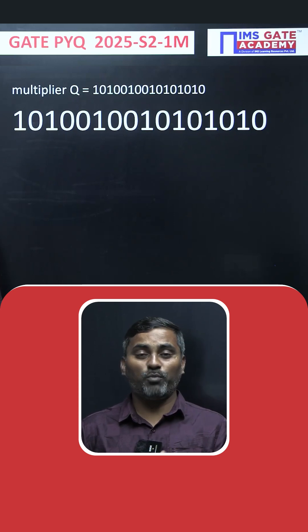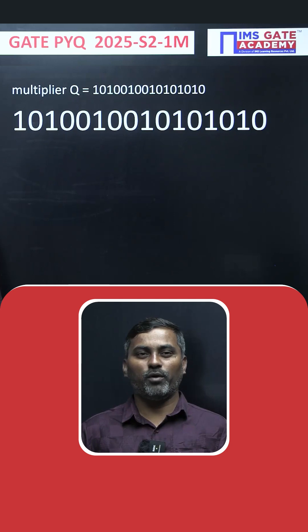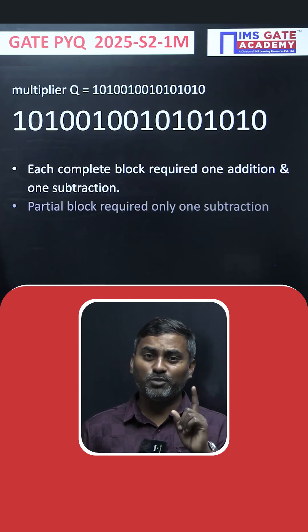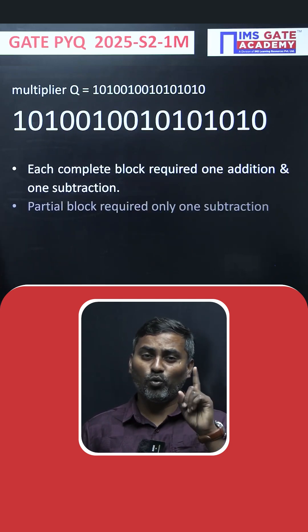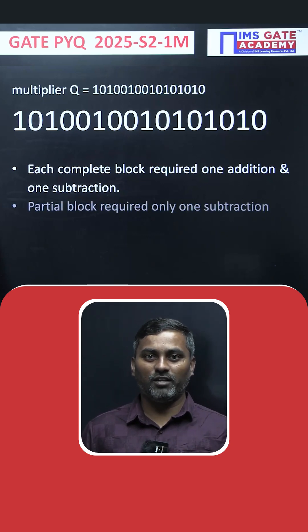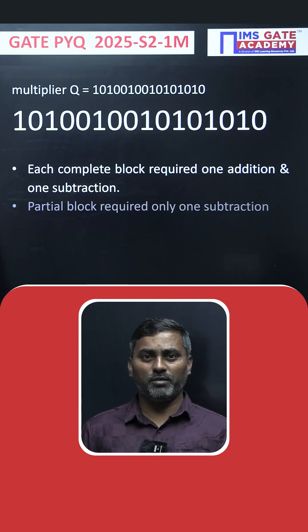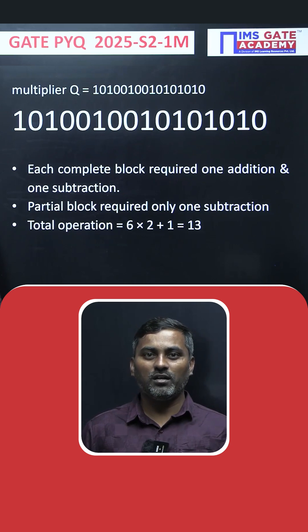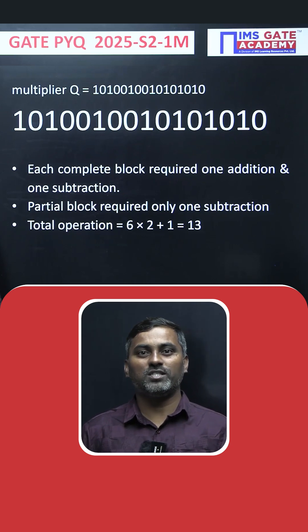Six complete blocks, one partial block. Each complete block requires one addition and one subtraction operation. Each partial block requires only one subtraction operation. The question asks for the total number of operations including addition and subtraction. Therefore: six complete blocks × two operations plus one partial block × one operation = 13. The answer is 13.